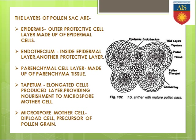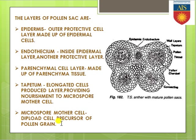Keep it in mind that tapetum is made up of elongated cells. These elongated cells are exclusively present for providing nourishment to the microspore mother cell. The microspore mother cell is a precursor of the microspore or pollen grain, and these cells are present centrally to each and every pollen sac.